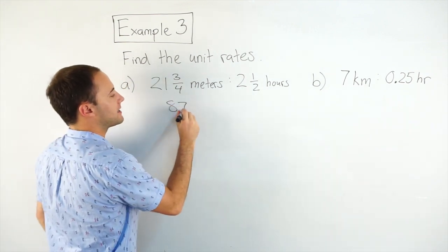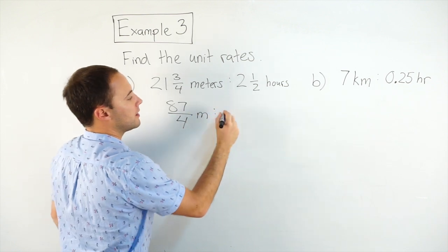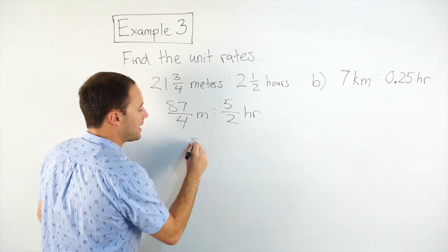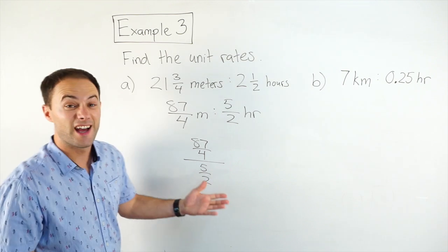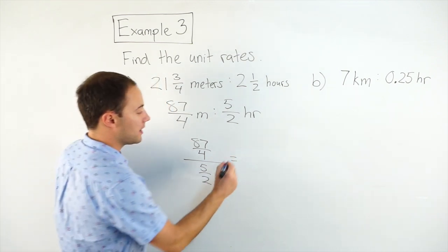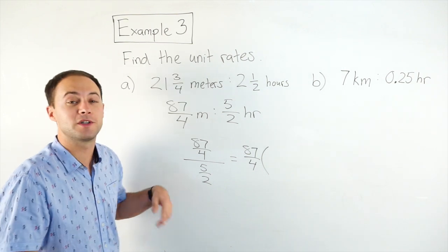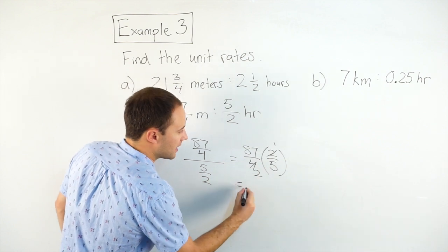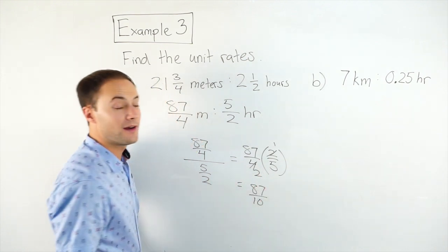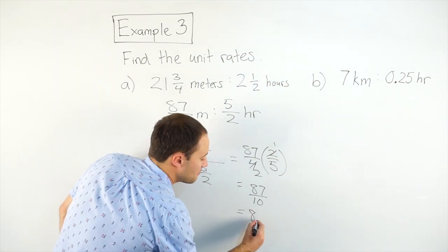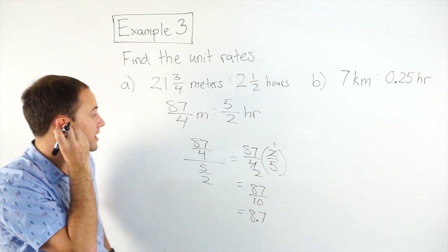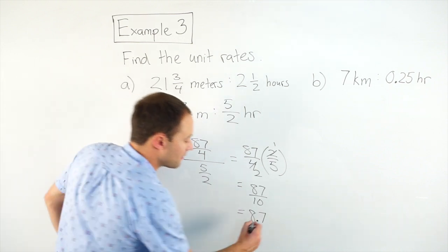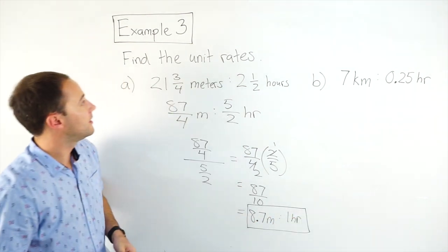So this is going to become 87 over 4 meters to 5/2 hours. And now I'm going to rewrite this as a complex fraction. 87/4 divided by 5/2. And now I'm just going to do that division. Just simplify. 87/4 divided by 5/2, which is the same thing as multiplying by 2/5. Simplify there. Simplify there. And I get 87 over 10, which is really nice because I'm just going to change that to a decimal. 8.7. And now I've got to remember my units. This is 8.7 in the numerator. When we simplify that, that becomes my first number, 8.7 meters per 1 hour. And there is my unit rate for A.